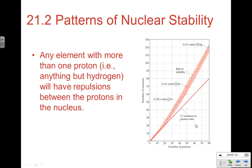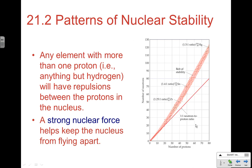The next section gets into stability — looking at when you are stable, what can cause instability, and how an atom can undergo nuclear reactions to become more stable. An element with more than one proton, anything but hydrogen, is going to have repulsions between the protons. By Coulomb's law, when things are very close together — and it doesn't get much closer than inside the nucleus — there are going to be very strong forces of repulsion. This can cause nuclei to be unstable.